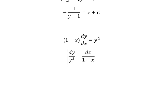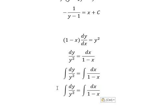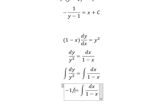Next we put the integration for both sides. So the integration of this one, you got negative 1 over y. The integration of this one, you got negative ln of the absolute value of (1 minus x).